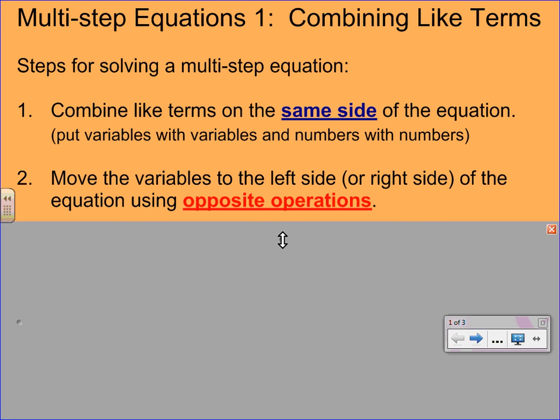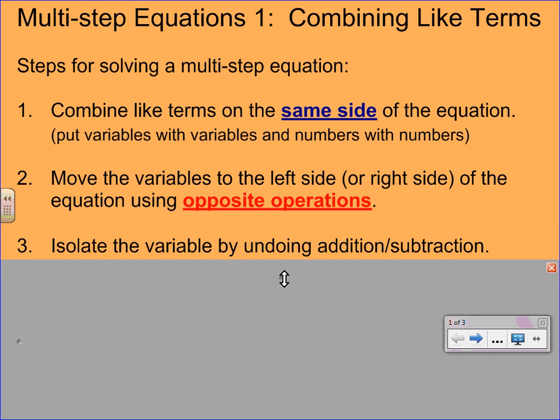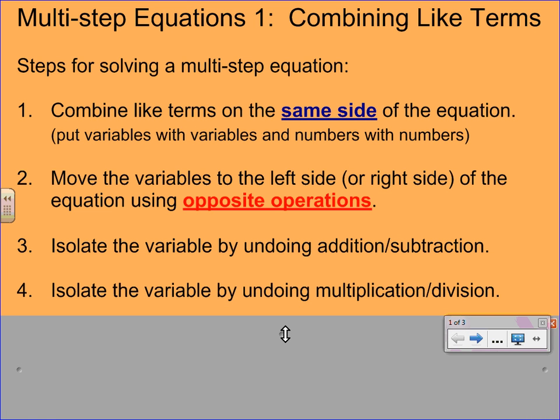Once you get this done, you're going to recognize these steps from previous lessons. Step 3 is to get the variable by itself or isolate the variable by undoing addition and subtraction, so always do that first.